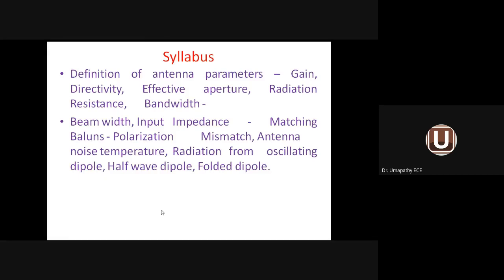Radiation resistance is a fictitious resistance — a resistance value that does not exist in practice. If available, the antenna would radiate that much power through it. This radiation resistance, along with loss resistance, determines the antenna efficiency factor: η = R_radiation / (R_radiation + R_loss).